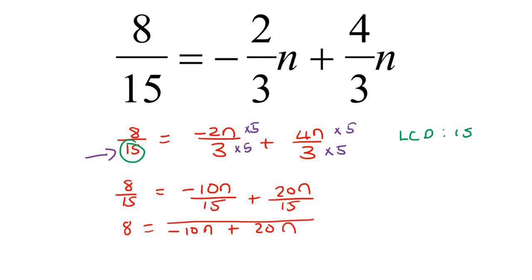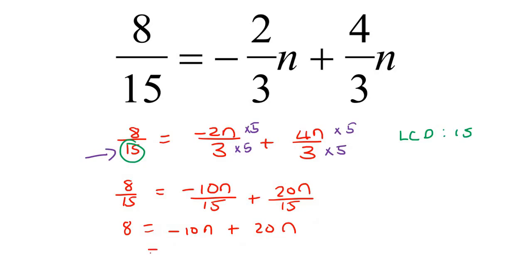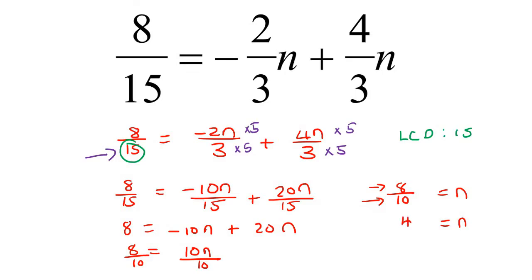The variables are already on the same side, which makes life easy. So we say minus 10 plus 20, which is 10n, and this side is 8. Divide both sides by 10, so n equals 8 over 10. Be careful though — that can simplify. The number 2 goes into both, so it becomes 4 over 5, and that is the most simplified answer.